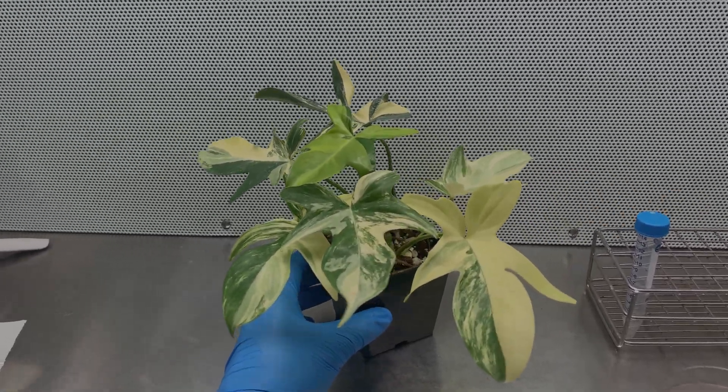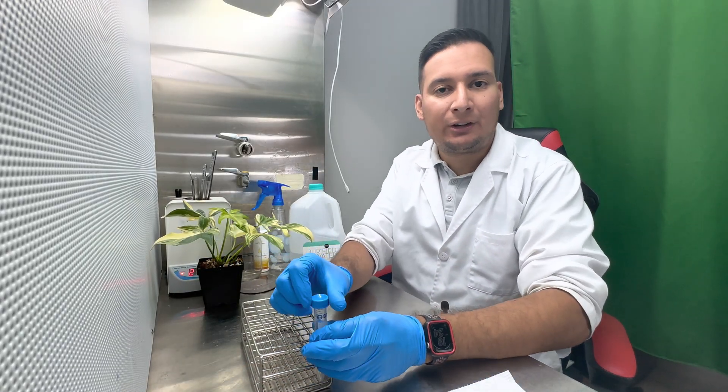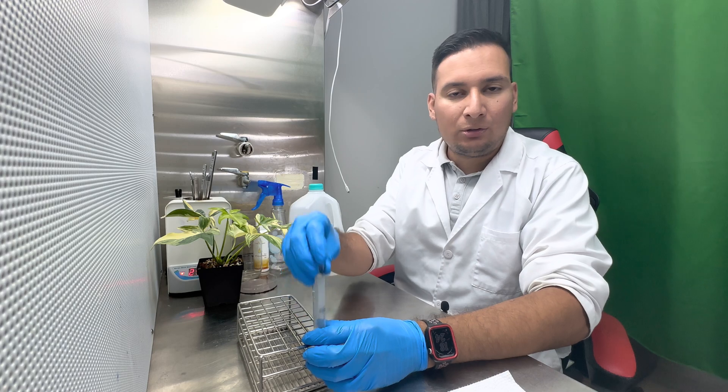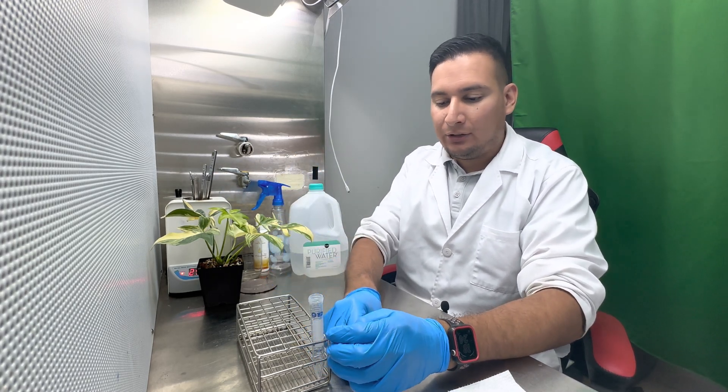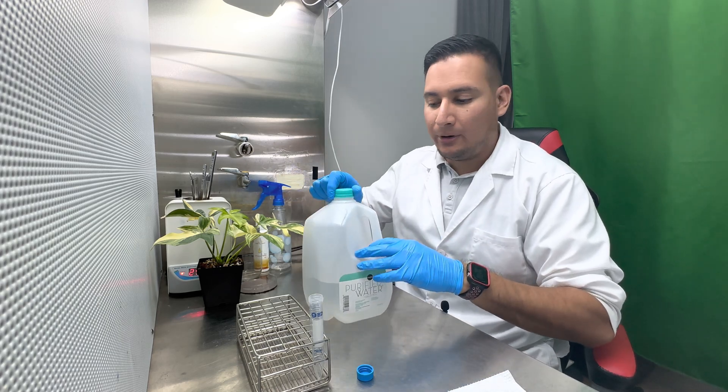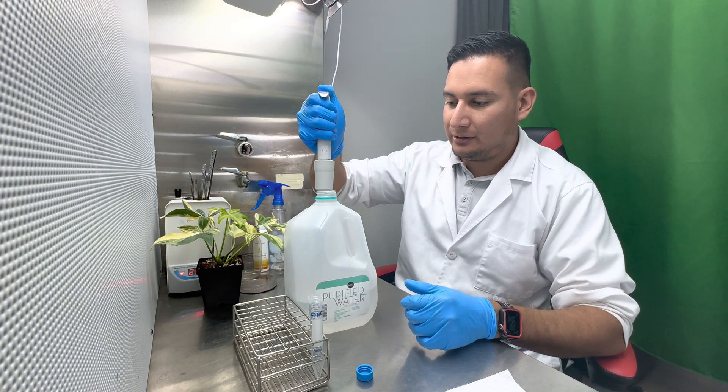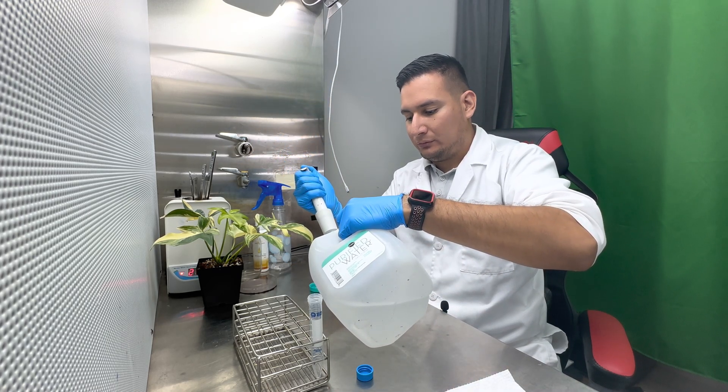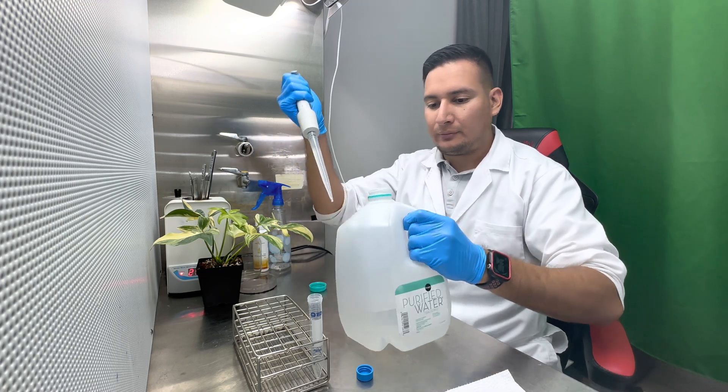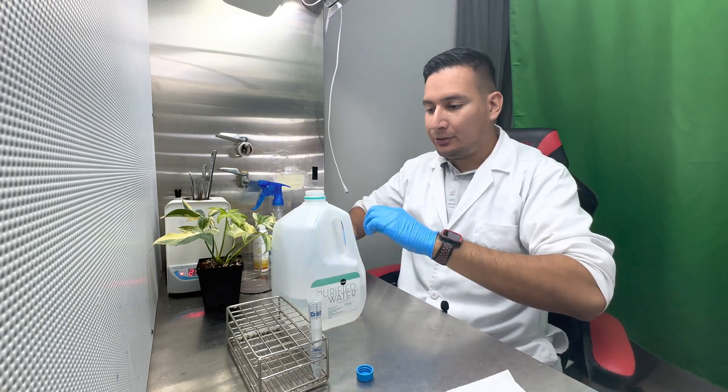So let's get started. The first thing I'm going to do is make my sterilizing solution. I want to use a small test tube because I want to take a small cutting. I'm going to take nine milliliters of distilled water.